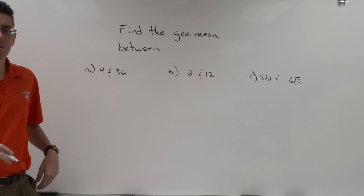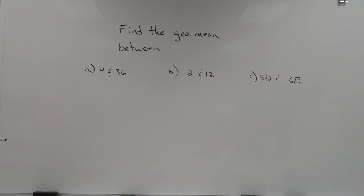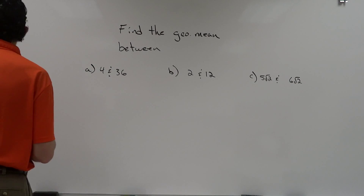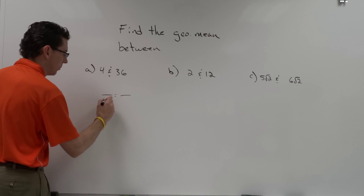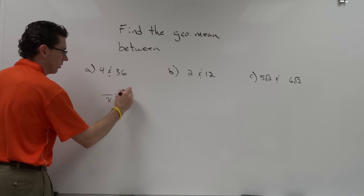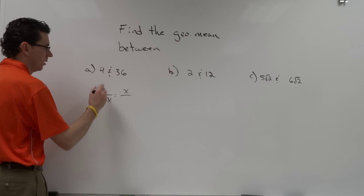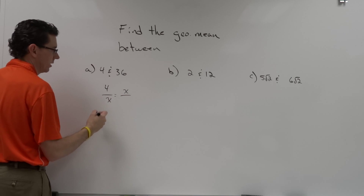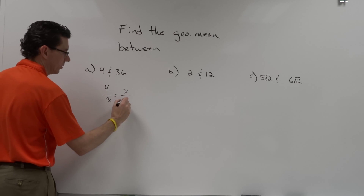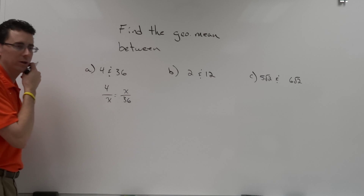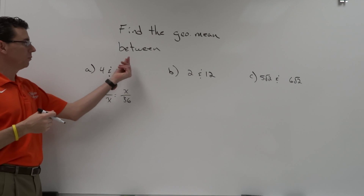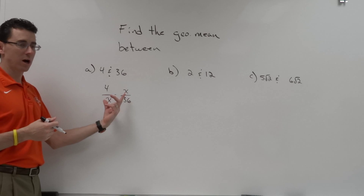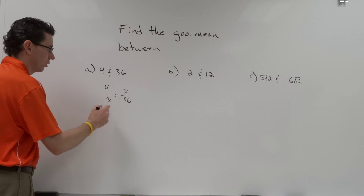There are three problems finding the geometric mean. When they're asking you to find the geometric mean, we're going to put the variable in the denominator of one ratio and the numerator of the other — we're just going to use x — and then the numbers that it's the geometric mean between go to the other two spots, the extremes. Right — means and extremes. So now to solve this we're just going to cross multiply.